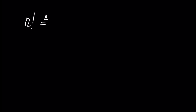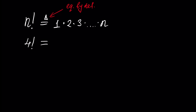First of all we have to explain the definition of factorial. When we write n factorial, by definition this is equal to 1 × 2 × 3 × ... × n. As an example, 4 factorial is equal to 1 × 2 × 3 × 4, which equals 24.